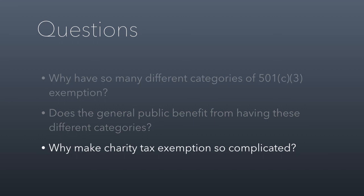We're done. Sorry, this was a longer class session than normal, but it's good stuff, and we'll talk about it in class. Some discussion questions: why do we have four categories of 501c3 status? Does the general public really benefit from these different categories? And why make charity tax exemptions so complicated?